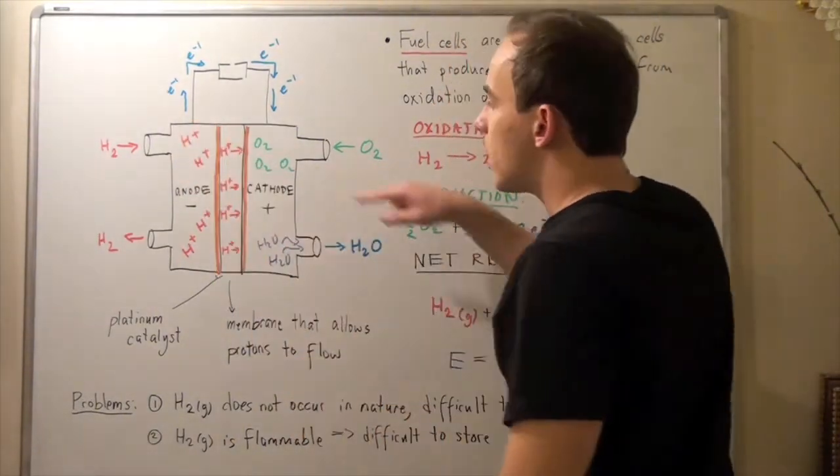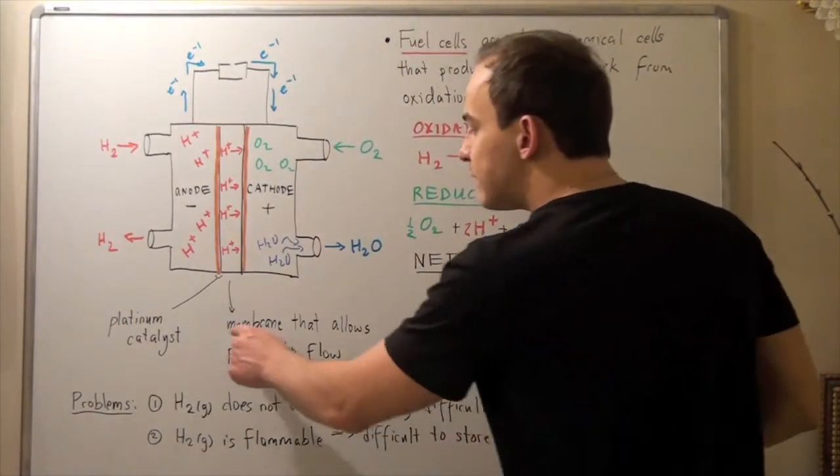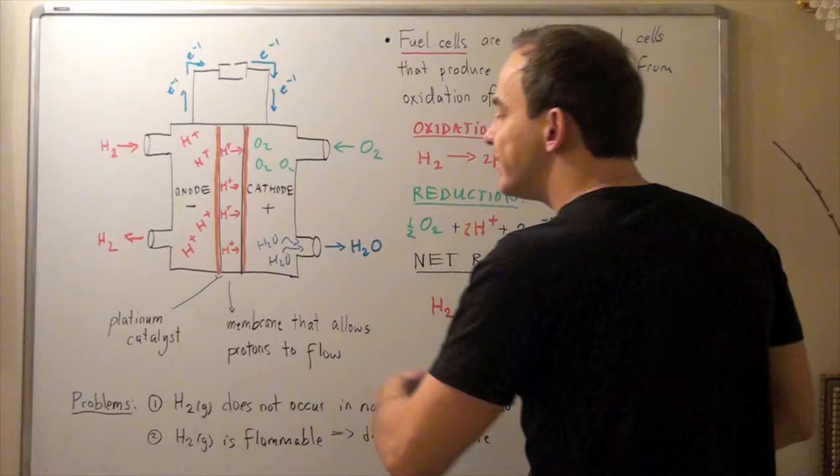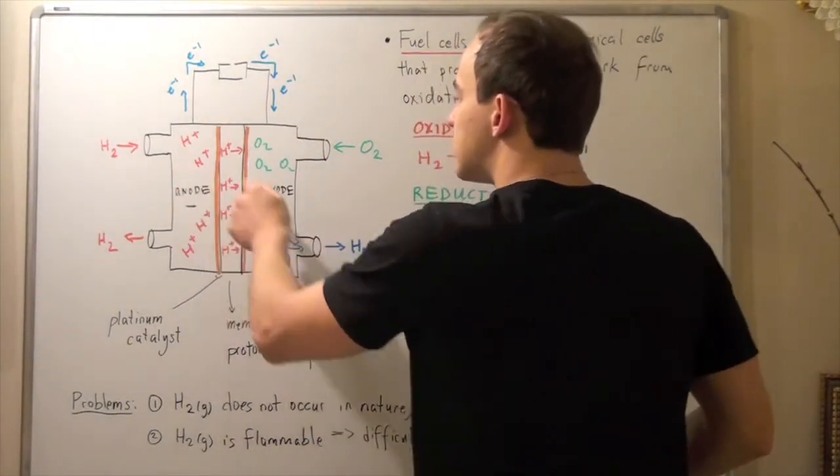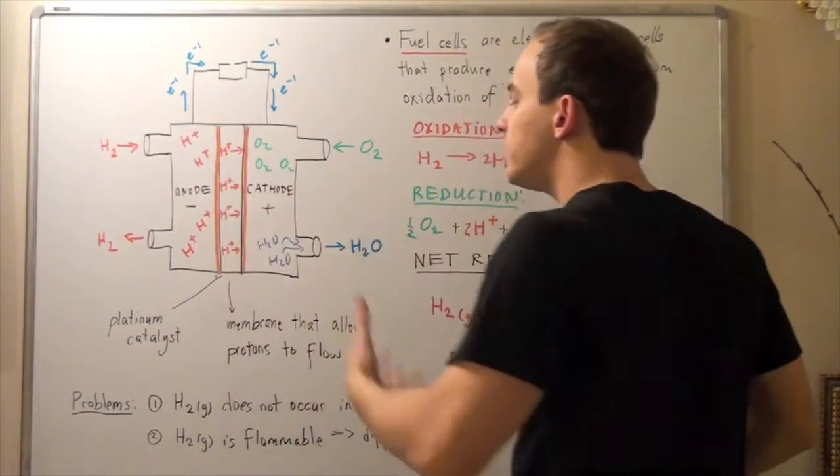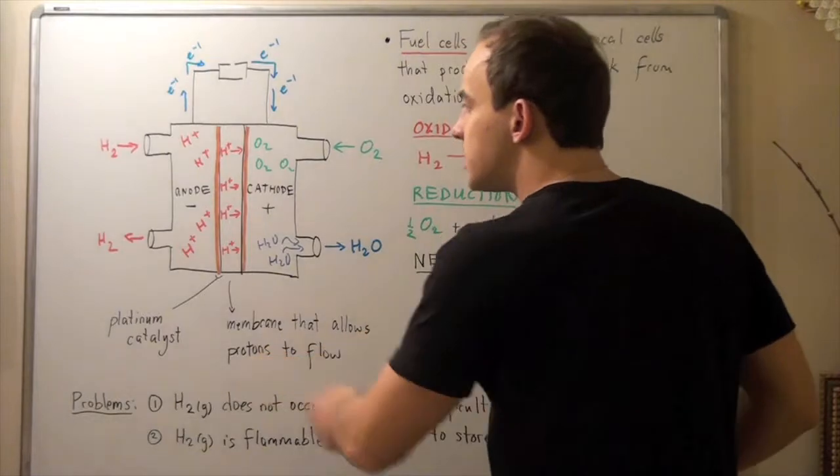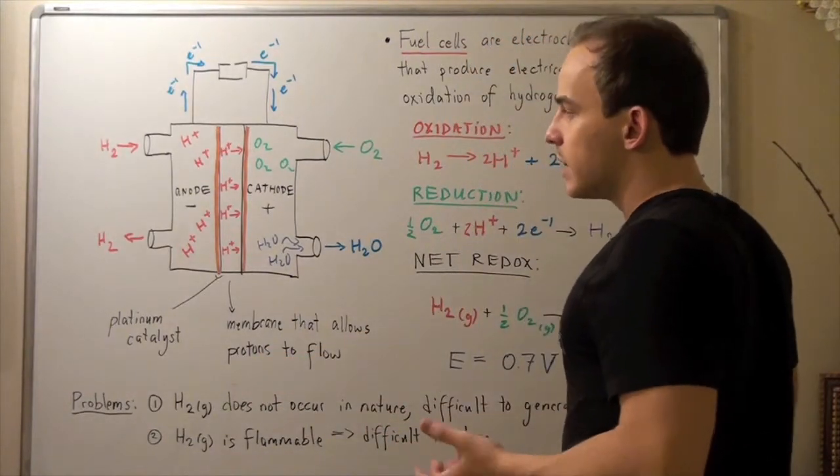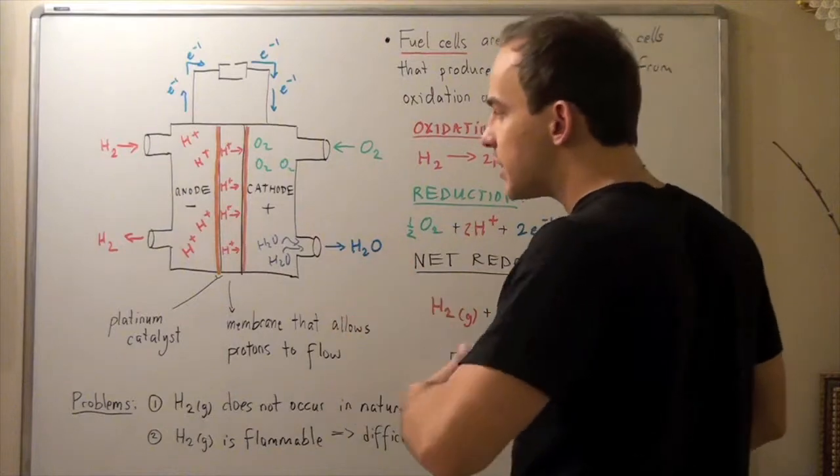Now, these two moles of electrons travel via the conductor this way. Notice we have a membrane. And this membrane does not allow our electrons to pass from this anode to cathode via this membrane. This membrane only allows H-plus ions to flow or protons to flow. Now, why should we allow our protons to flow? Well, we'll talk about that in a bit.